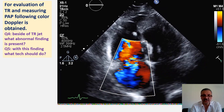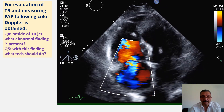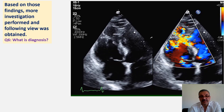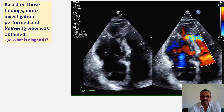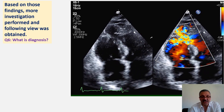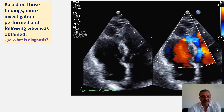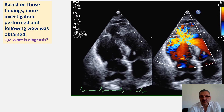Question five: with these two findings, what should the sonographer do? Based on those findings, the sonographer goes and focuses on further investigation, and finds this jet. Now, what is the diagnosis based on that jet?